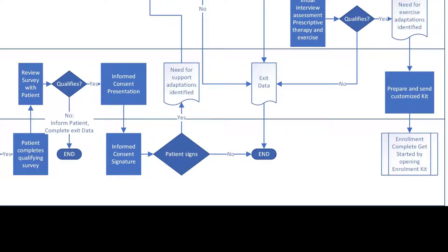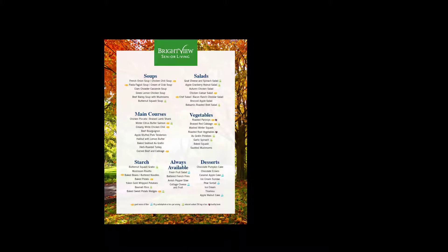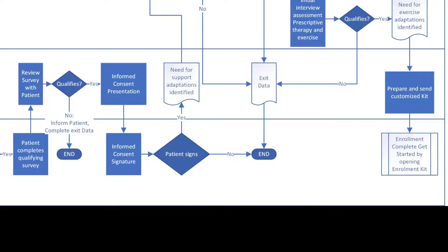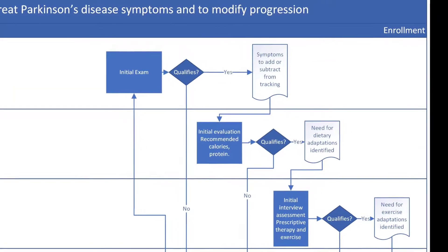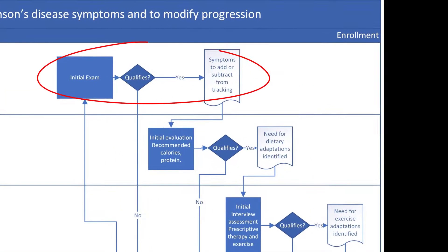Next, the research manager identifies adaptations that must be made for this participant. Are they in assisted living? Will the facility be able to accommodate changes in menus? Are they able to use a touchscreen or smartphone? Do they have a partner or caregiver that desires to assist with the trial?